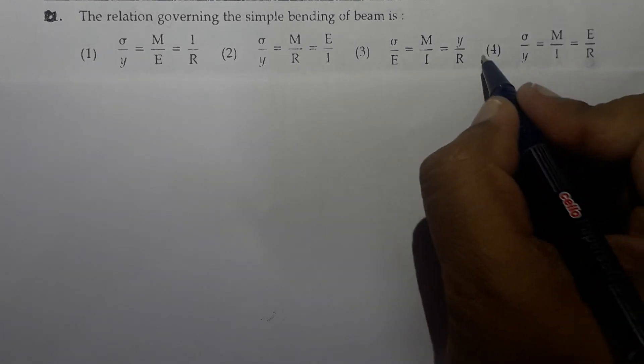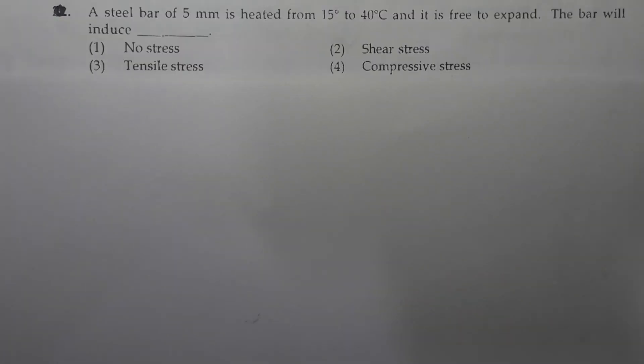Next question: The relation governing the simple bending of beam is. Now we know that the equation of bending is given by sigma bending divided by Y equals M upon I equals E upon R and that is why the correct option is option number 4.